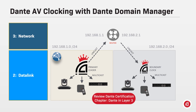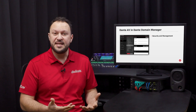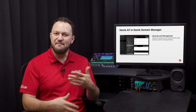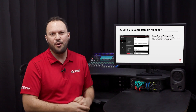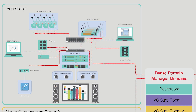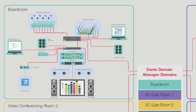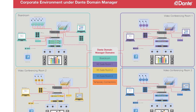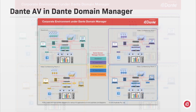We recommend reviewing the Dante certification program chapter about clocking in a layer 3 environment to refresh these concepts. DDM secures systems with customized user access control and keeps a log history of every event that has happened on the Dante network. In a multi-room AV setup, DDM can be used to ensure security between audio and video systems in each room, ensuring that confidential and sensitive information is not available elsewhere on the network — confident that only the audio you share goes where you decide.